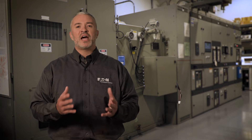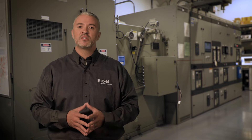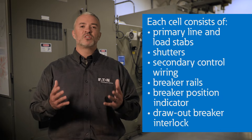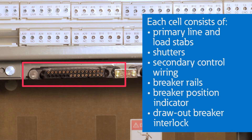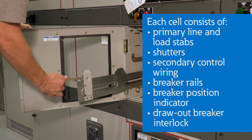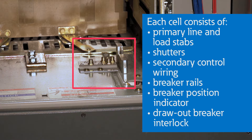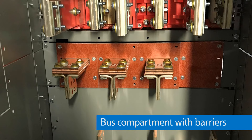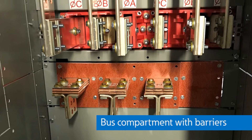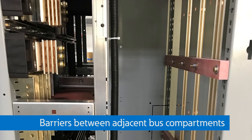For example, should a catastrophic fault occur on a circuit breaker, the internal barriers within the switchgear will reduce the likelihood of damage to adjacent breakers, internal bus, and the structure. Each compartment or cell generally consists of primary line and load stabs, shutters, secondary control wiring, breaker rails, breaker position indicator, and a draw breaker interlock which prevents the insertion of circuit breakers with incorrect frame size and interrupting ratings. Behind the circuit breaker compartment is the bus compartment, which is also compartmentalized by solid barriers from the breaker compartment. Adjacent bus compartments are segregated from each other by an insulated barrier between compartments.